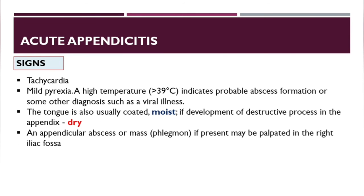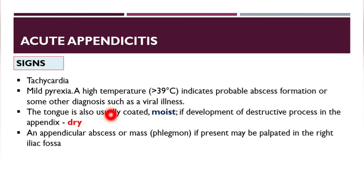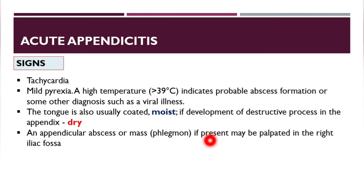Common signs include tachycardia and mild pyrexia. A high temperature above 39°C indicates probable abscess formation or another diagnosis such as viral illness. The tongue is usually coated and moist; if an obstructive process develops in the appendix, it will be dry. An appendicular abscess or mass (phlegmon) may be palpated in the right iliac fossa.